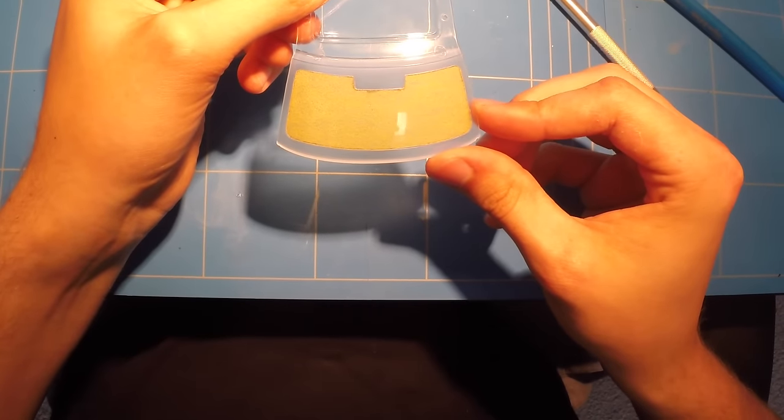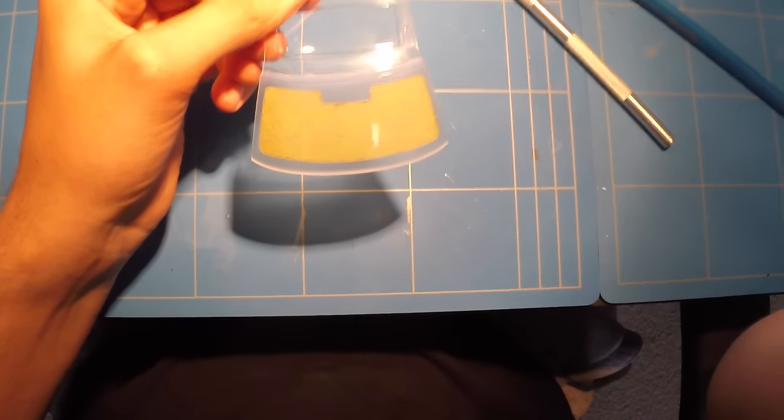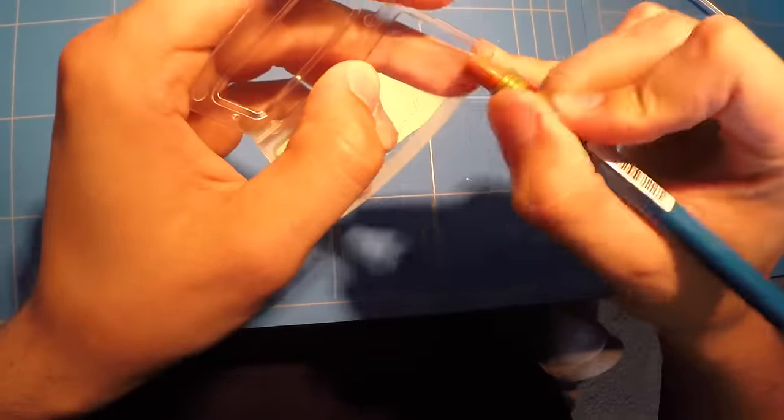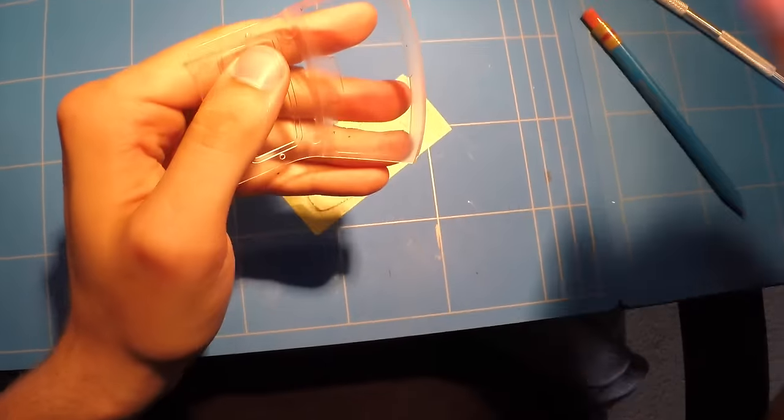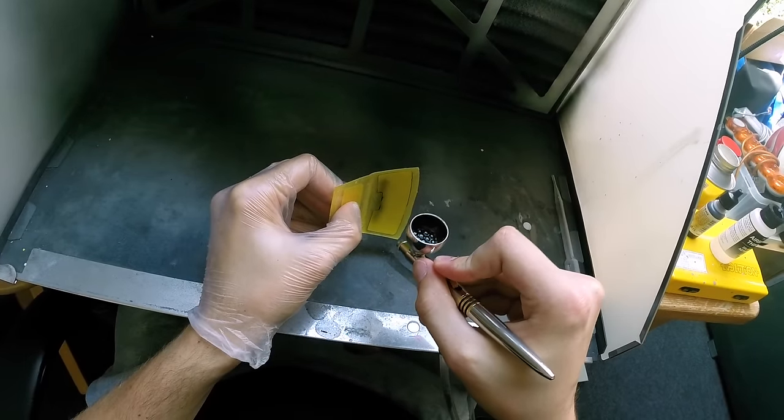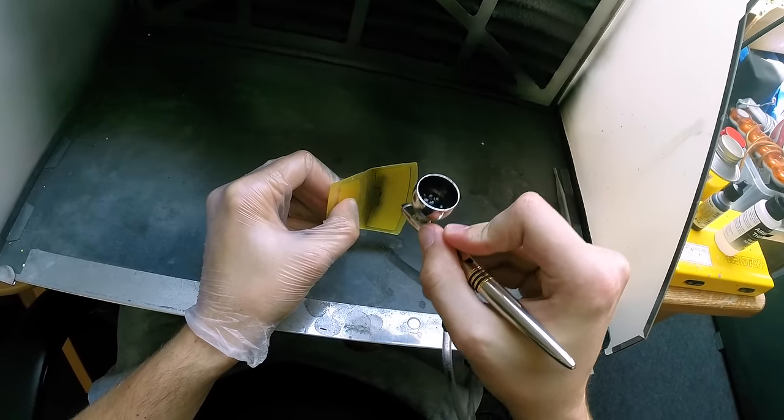And again you're left with a perfect template on your clear parts. Now before moving onto painting, remove the pencil marks because they look weird once painted.